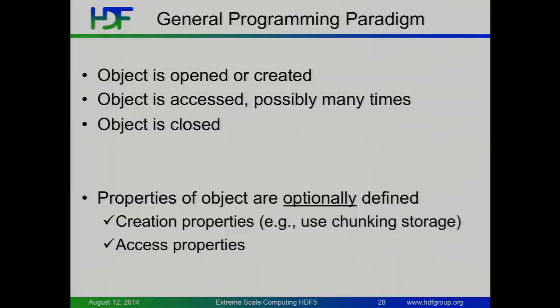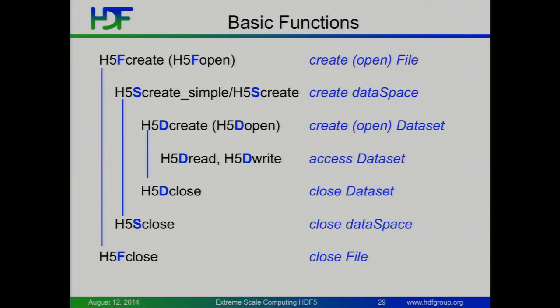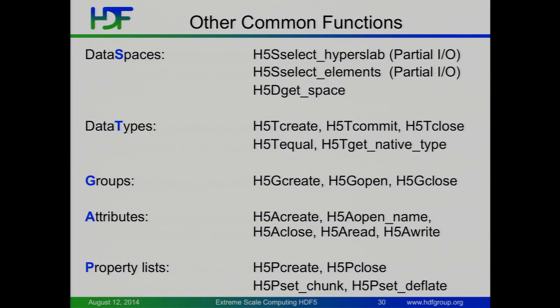The API looks a lot like C. You open your object, you do something with it, you close it. Properties kind of influence how that occurs — how do you create the dataset, how do you access those things? A very simple program would look something like: create or open a file, set up a data space to describe the dataset. There are a bunch of pre-defined data types — otherwise you'd define your own data type. Then you create your dataset, do your read or write, and shut things down. Seven or eight API calls, and you have a basic core of an HDF5 program. For setting up data selections and data spaces, you'll use hyperslab and element selections.